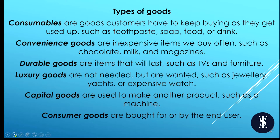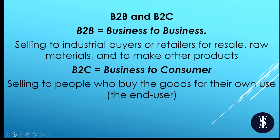Capital goods are used to make another product — typically a machine. Consumer goods are bought for or by the end user. B2B — business to business — involves selling to an industrial buyer or to a retailer for resale, such as raw materials or to make other products. B2C — business to consumer — involves selling to people who buy the goods for their own use, in other words the end user.